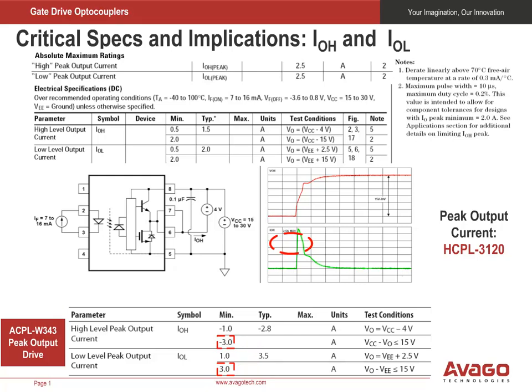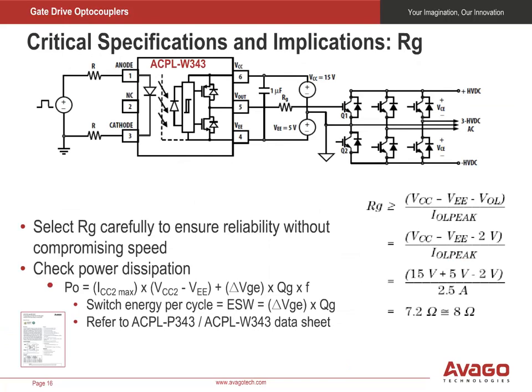From this example, we have learned that high peak output drive current is the key to switching IGBTs quickly. Once the best driver optocoupler is selected, you will calculate the largest gate resistor needed to limit the output current to the maximum allowable absolute current range of the gate drive optocoupler. The output low voltage, VOL, is close to 2 volts for devices with Darlington configurations. For rail-to-rail gate drivers such as the ACPL-W343, the VOL is only about 0.1 volts or 0.2 volts maximum.